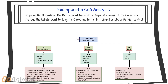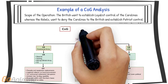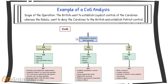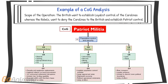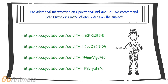To identify the center of gravity, we ask ourselves which adversarial entity has the ability to conduct the critical capabilities. In this case, the Patriot Militia is the only rebel entity able to conduct the critical capability and achieve the end state. To prevent a rush to judgment, identification of the center of gravity was delayed until the analysis of the critical factors was completed. For additional information on the elements of operational arts and center of gravity analysis, we recommend the following videos. Thank you for watching this video. Have a good day.